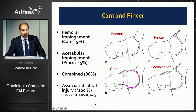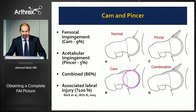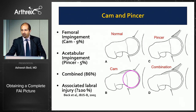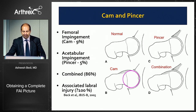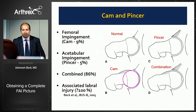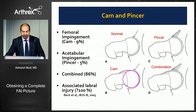Martin Beck published these concepts of cam and pincer — though they're terms we use, they are grossly oversimplified. The idea is that you have loss of offset or asphericity on the femoral side and over-coverage on the acetabular side. Most commonly when there's one, there's the other. But we need to think about several specific types of cam and pincer lesions differently.